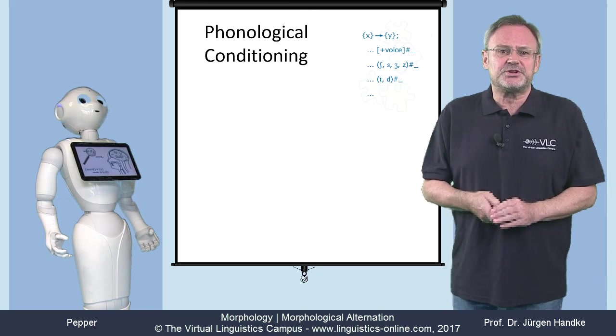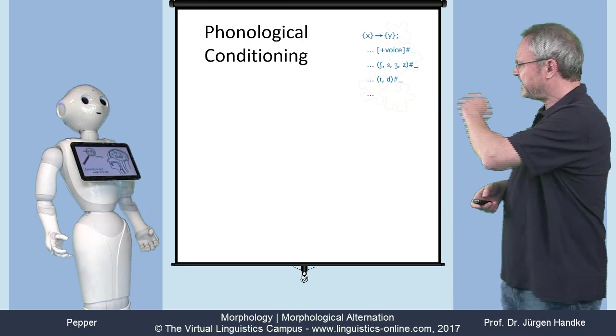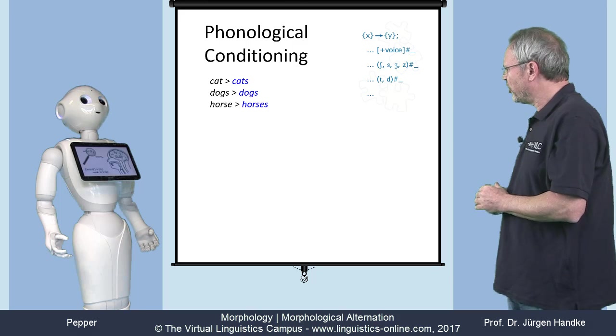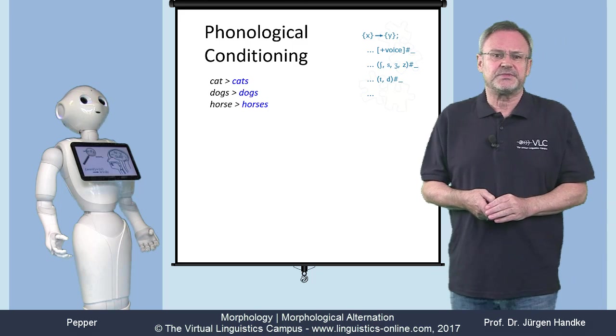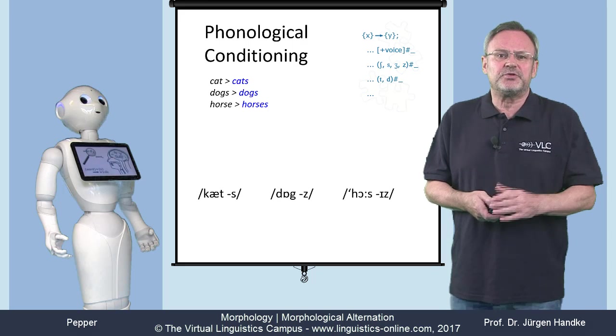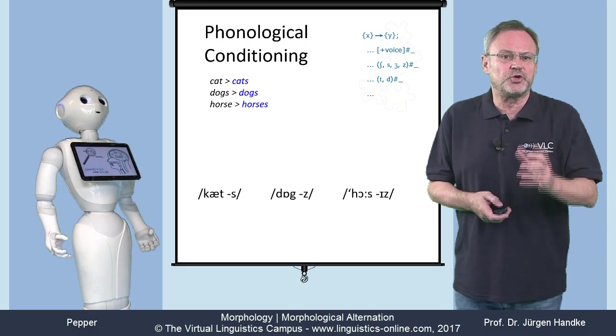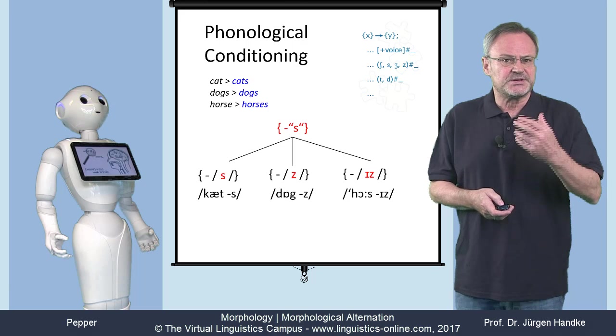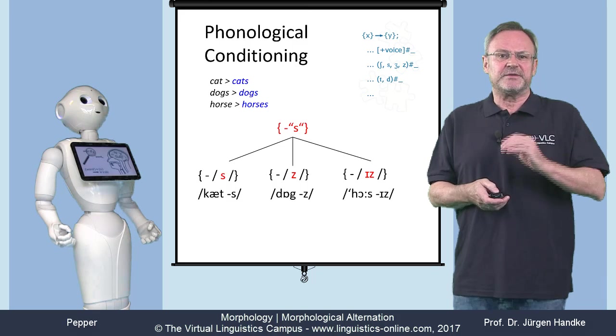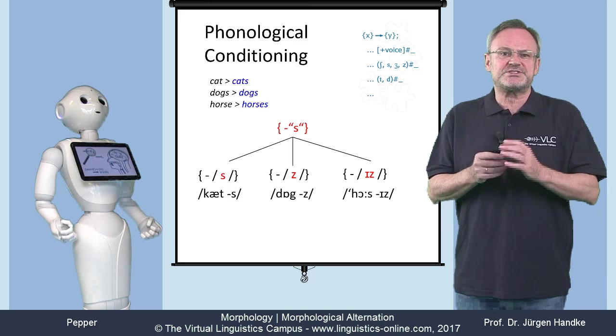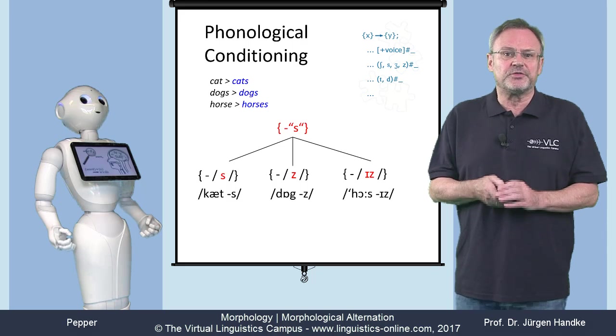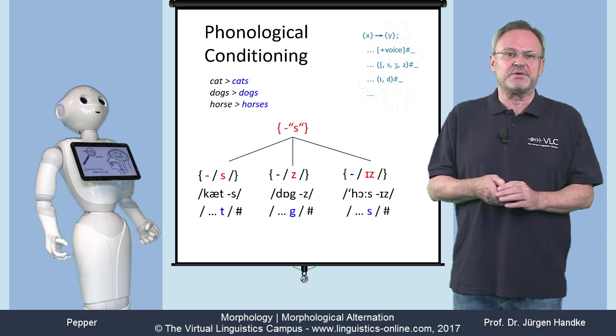Consider the following English word pairs: cat, cats; dog, dogs; and horse, horses. In all three pairs, the plural morpheme 's' is phonologically different: /s/, /z/, and /ɪz/. However, the distribution of its allomorphs is complementary and can be predicted on the basis of the final stem consonant.